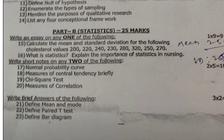For the essay section in Part B, write an essay on any one of the following 2 questions — each carrying 9 marks. Question 15: calculate the mean and standard deviation for the following cholesterol values: 200, 220, 240, 230, 280, 320, 250, 270. You have to calculate both the mean as well as the standard deviation for these values.